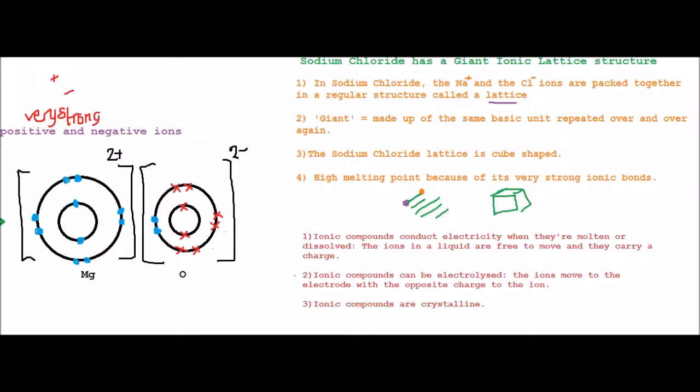Okay, the next thing to point out is that ionic structure explains the behavior of ionic compounds. So the first point is that ionic compounds conduct electricity when they're molten or dissolved. The ions in a liquid are free to move and they carry a charge.